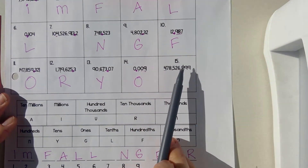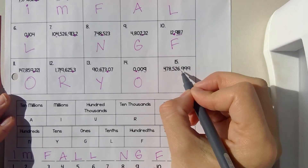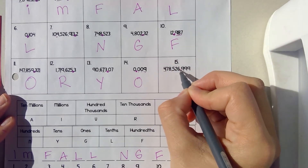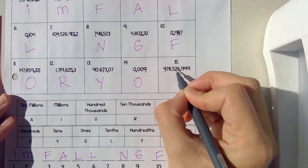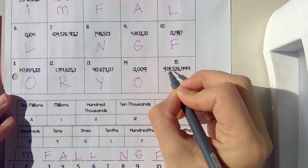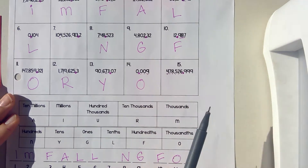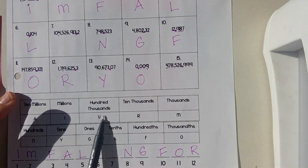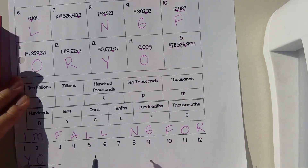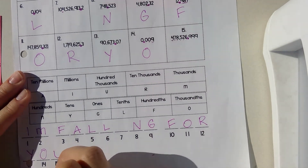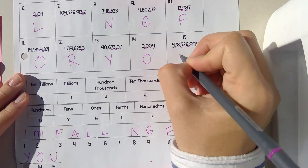Number fifteen — this is the decimal. So that's ones, tens, hundreds, thousands, ten thousandths, hundred thousandths. So hundred thousandths is a U. So number fifteen is U.